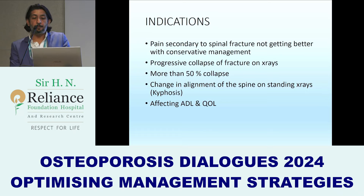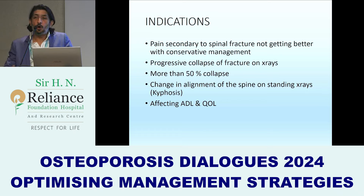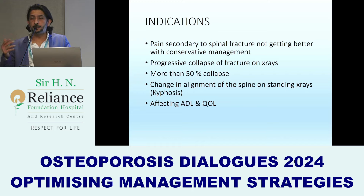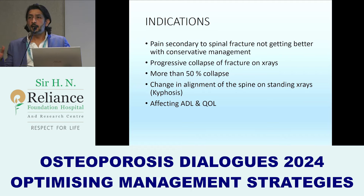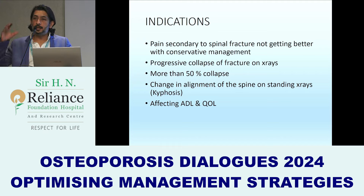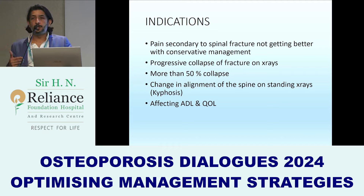Indications are mainly pain secondary to a spinal fracture not getting better with conservative management, or if we start seeing a progressive collapse of the fracture. So initially when the patient comes into the clinic, the height has collapsed around 80 to 20 percent — 80 percent remaining is good. But at two weeks follow-up on a standing X-ray, if we are seeing that the height is collapsing further, then we do the vertebroplasty to avoid further collapse.